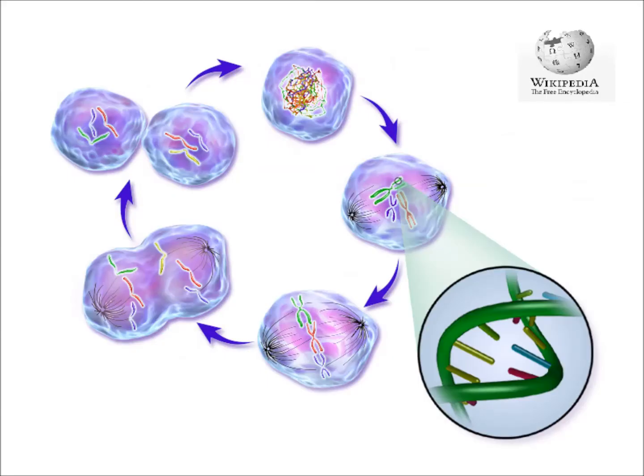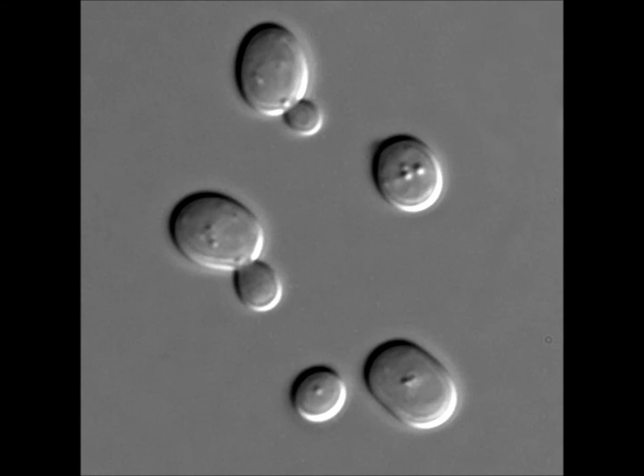The cell division cycle begins with an initial growth phase, G1, during which time the cell increases in mass and volume. The transition from G1 into S phase is marked by progression through the start point of DNA division, and the emergence of a bud that will form the new daughter cell. The S phase is followed by a second growth phase, and this is in turn followed by nuclear division, and then cell separation.